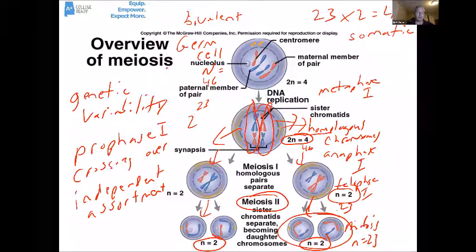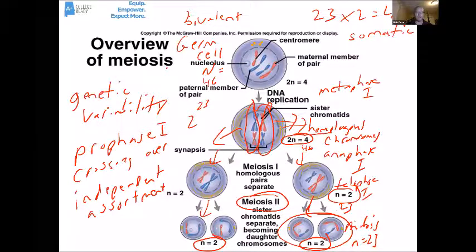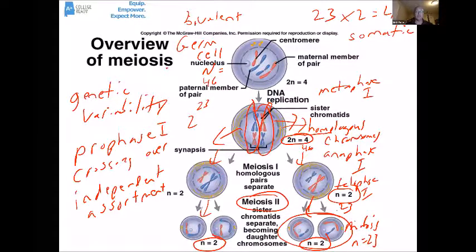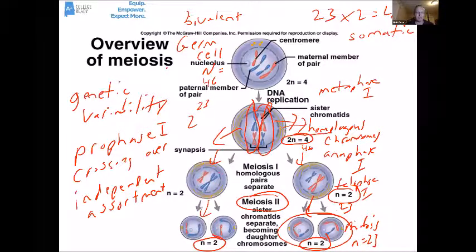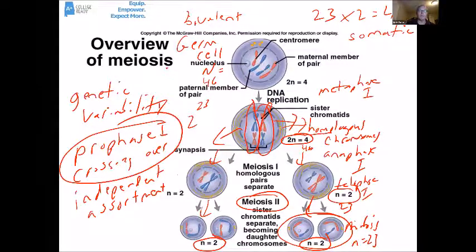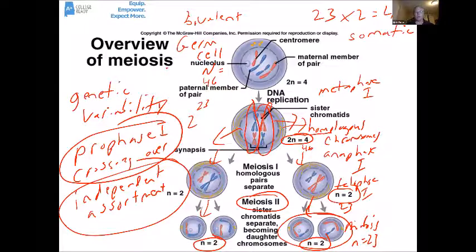In prophase 1 you get crossing over, where homologous chromosomes swap gene segments and create new chromosomes passed on to offspring. Independent assortment happens in metaphase 1, where homologous chromosomes line up randomly and end up in different gametes, creating different versions every time. So meiosis is about two things: taking diploid germ cells and creating haploid gametes so the chromosome number stays constant generation to generation, and creating genetic variability through crossing over and independent assortment.